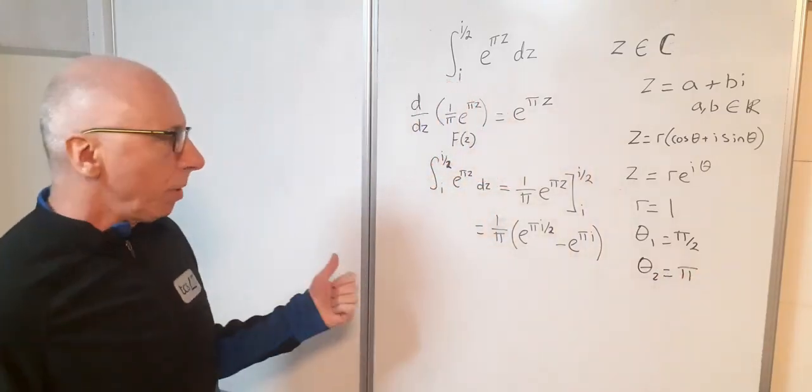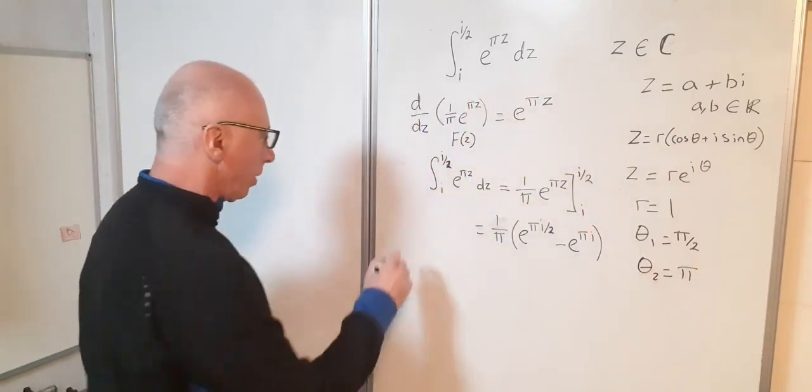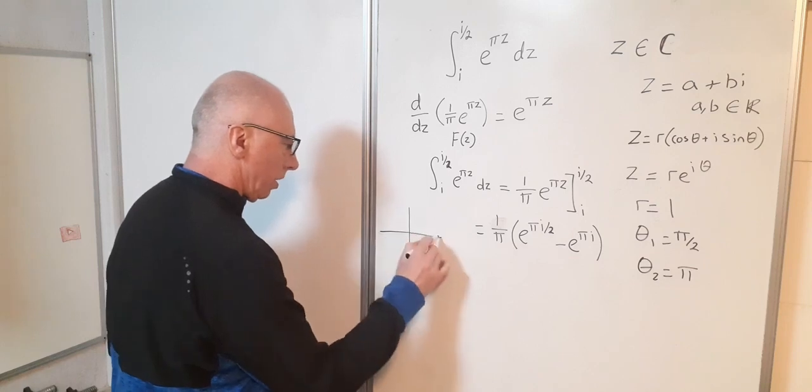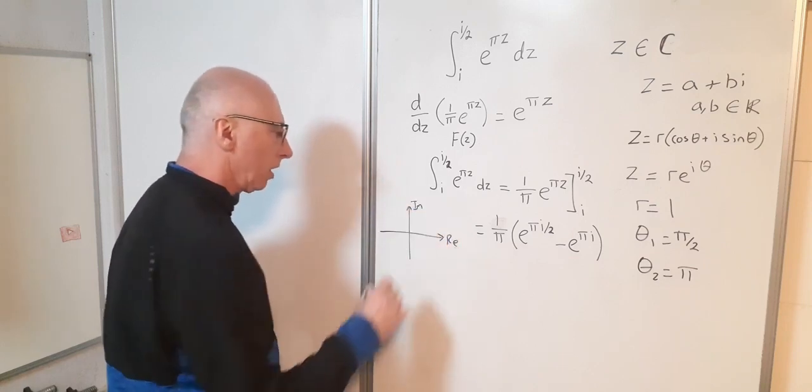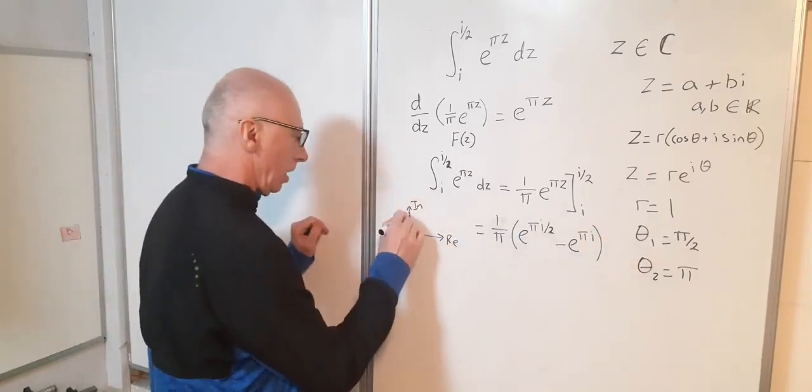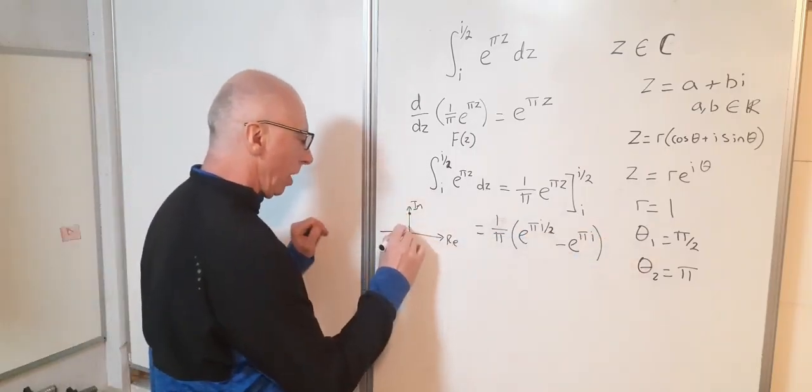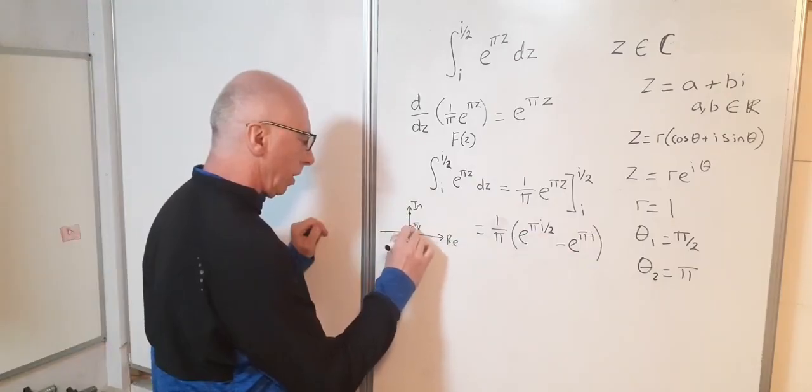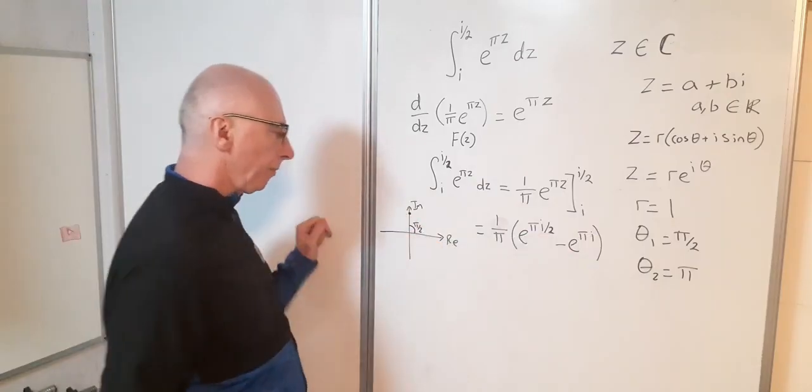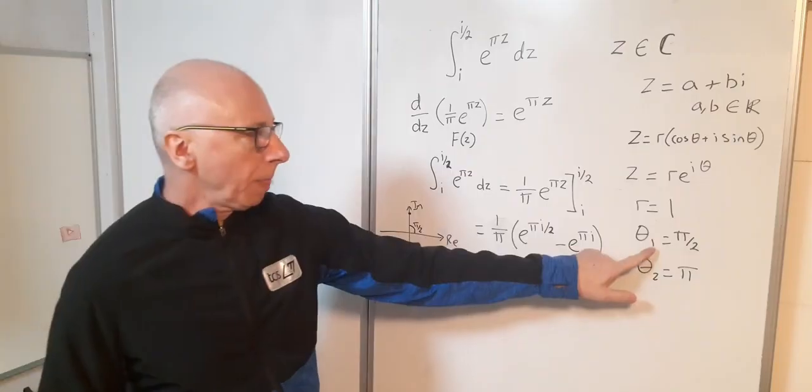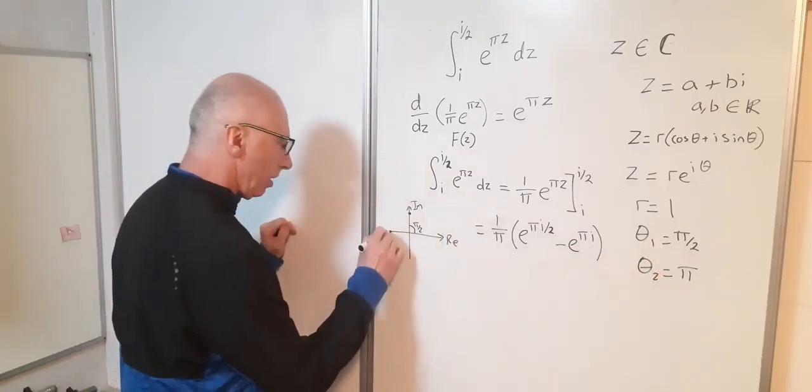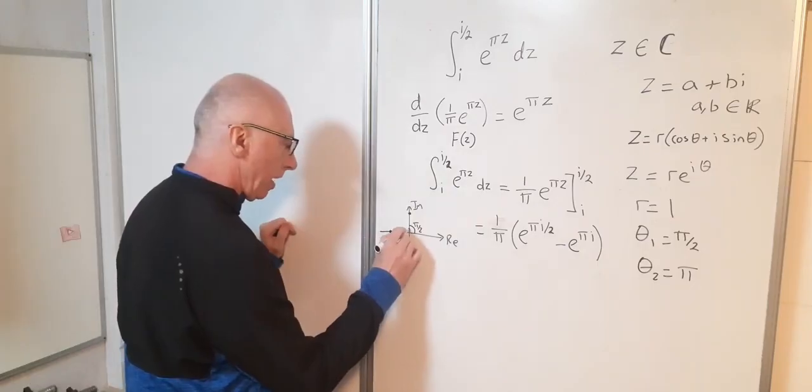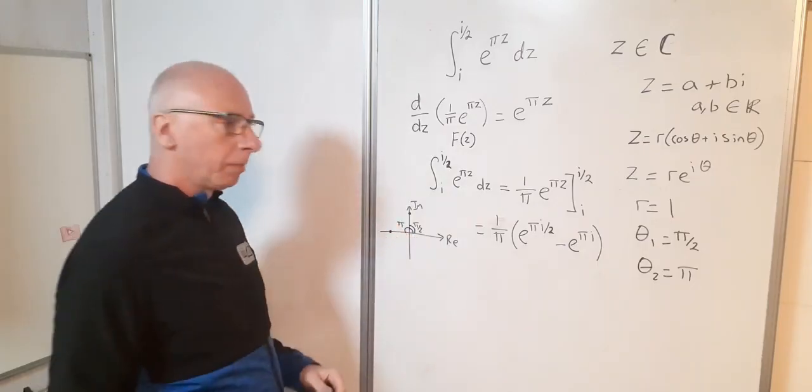Let's represent those on the Argand diagram. So that's my real and that's my imaginary. Now pi over 2, that's that angle there, pi over 2 comes to here. And my second one, theta equals pi. So this is my angle there, from there to there will be pi.